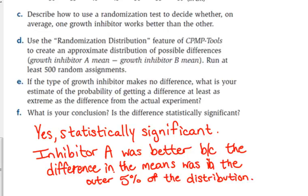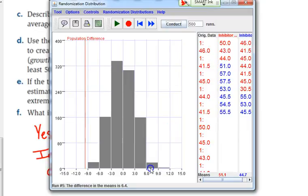Now, let's look at question E for just a second. I'm not super concerned about this, but if anybody read it and was wondering what it's talking about. E says, if the type of growth inhibitor makes no difference, what is your estimate of the probability of getting a difference at least as extreme as the difference from the actual experiment? Well, to figure that out, you look at the randomization distribution.